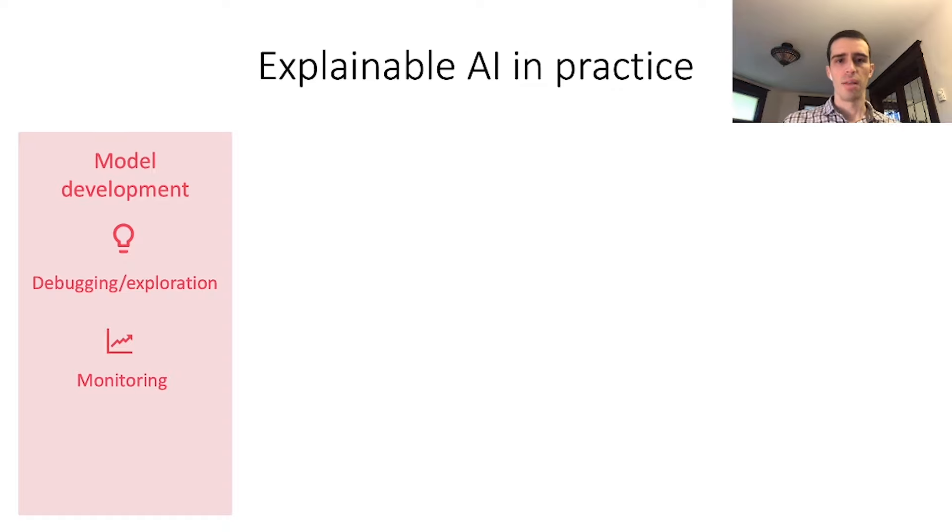We've talked about one example of explainable AI in practice—debugging and model exploration. But there are many other ways to use these types of interpretability in your workflow. You can monitor models by explaining their error over time. You can encode prior beliefs about models and use explanations to control your model training process.